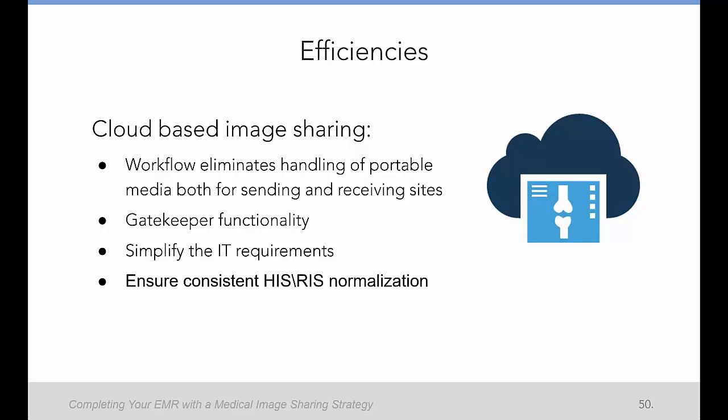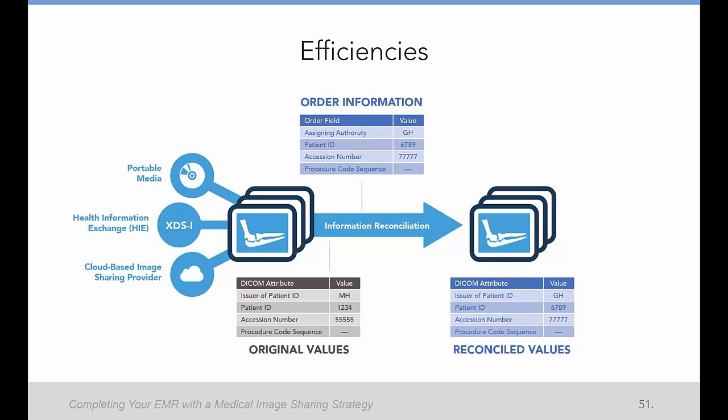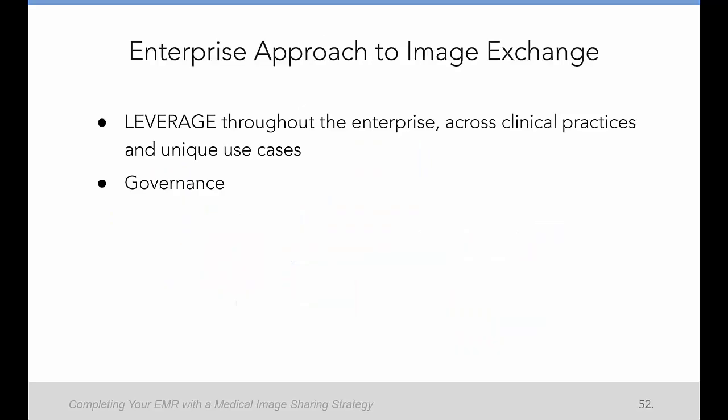A fourth area of efficiency is consistent data normalization. The cloud-based platform ensures that externally generated studies have the same exam code definitions and modality definitions as ours, so metadata matches our EMR and PACS. Studies hang properly using hanging protocols, and when a referring provider sees an imaging study in the EMR, they understand what it is and what body part it relates to — consistent with imaging studies generated here at U of R Medicine.